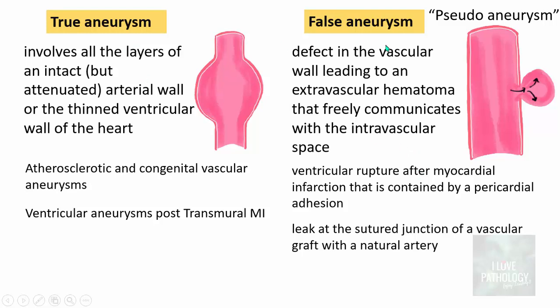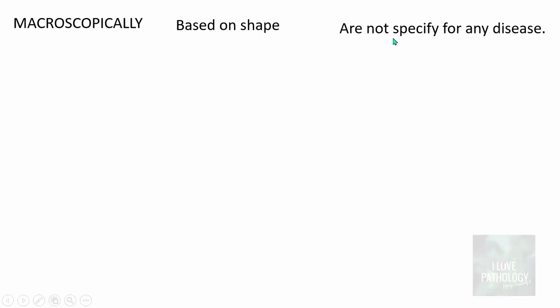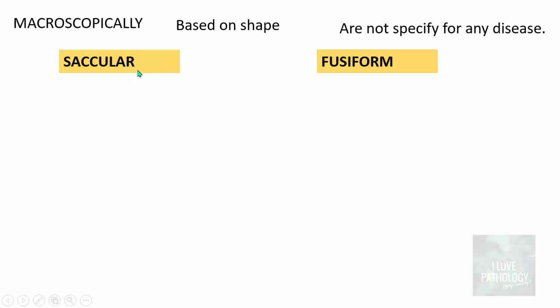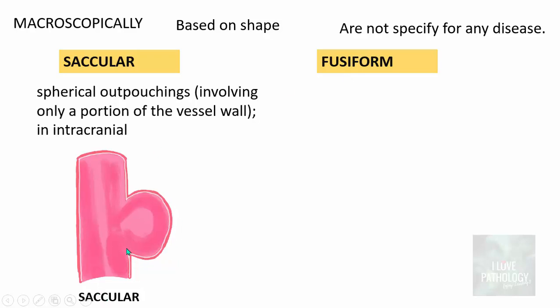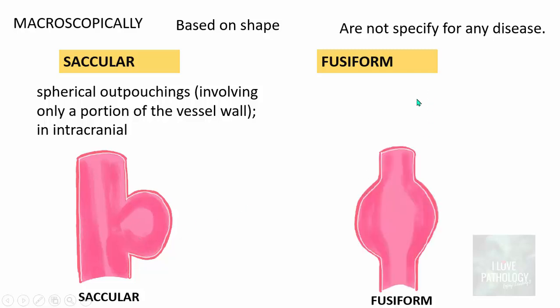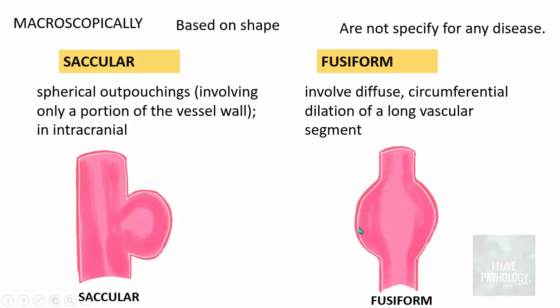Whether it is a true aneurysm or false aneurysm, both types can rupture, which can lead to catastrophic consequences. Macroscopically, aneurysms can also be categorized based on shape — these are not specific for any particular disease. Based on shape, they are classified as saccular aneurysm and fusiform type. A saccular aneurysm is a spherical outpouching involving a portion of a vessel wall — for example, intracranial berry aneurysms. A fusiform aneurysm involves diffuse circumferential dilatation of a long vascular segment.